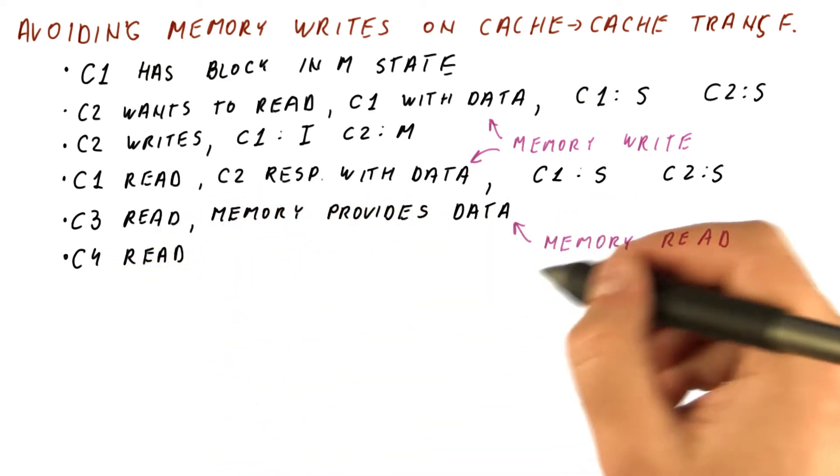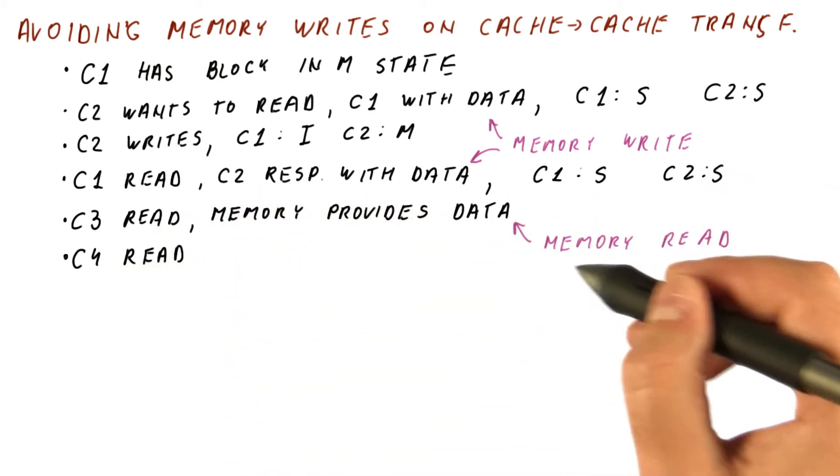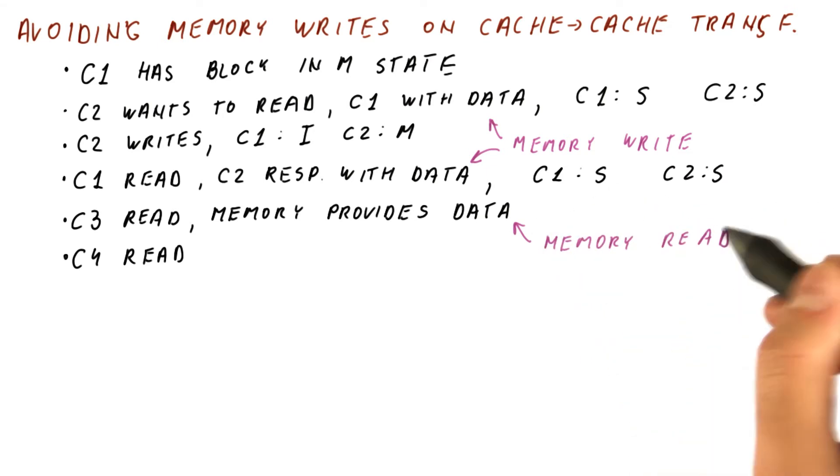So if another core reads, same thing, we get the memory read, although now there are three cores with the data in the shared state and so on.